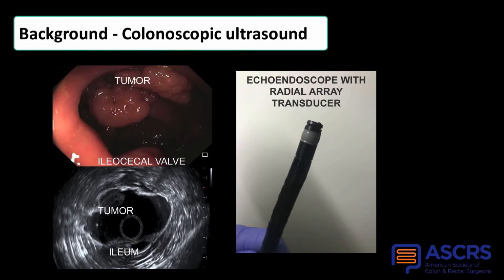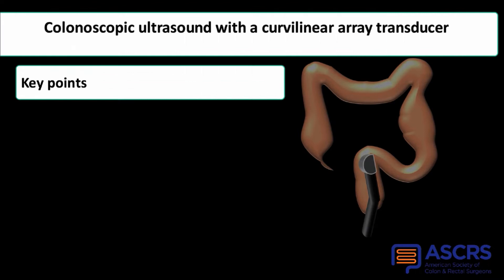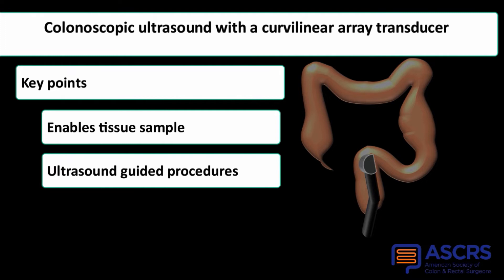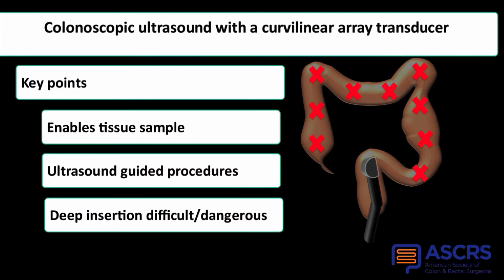Using curvilinear array transducers in the colon will cause great impact because it will allow obtaining tissue samples and unlock ultrasound-guided procedures in the colon. However, because of the oblique view of the scope, deep insertion beyond the rectosigmoid area is difficult and dangerous. Therefore, there are only few studies published using this kind of probe in the colon, and the insertion technique had to be standardized.